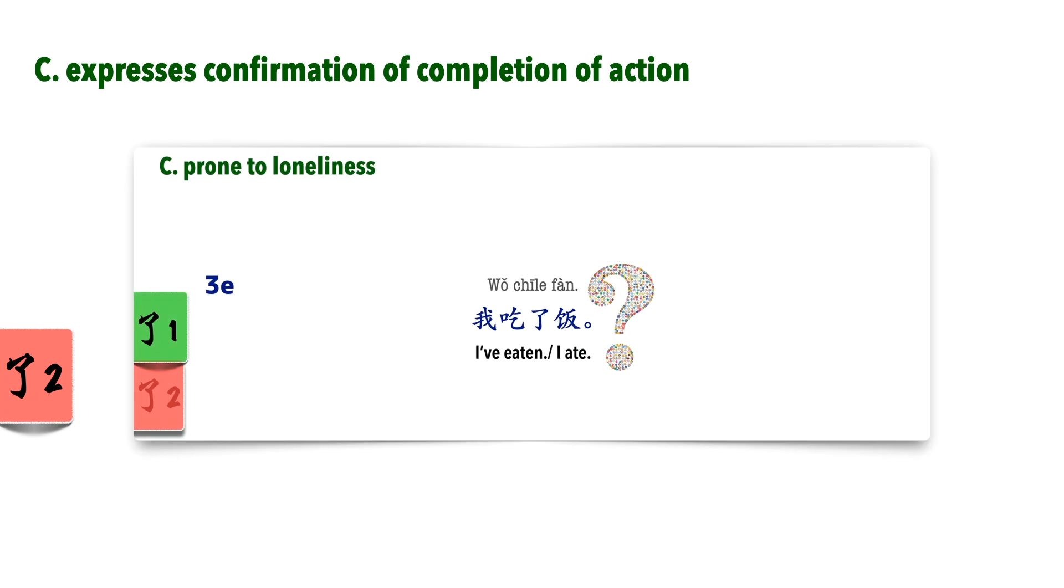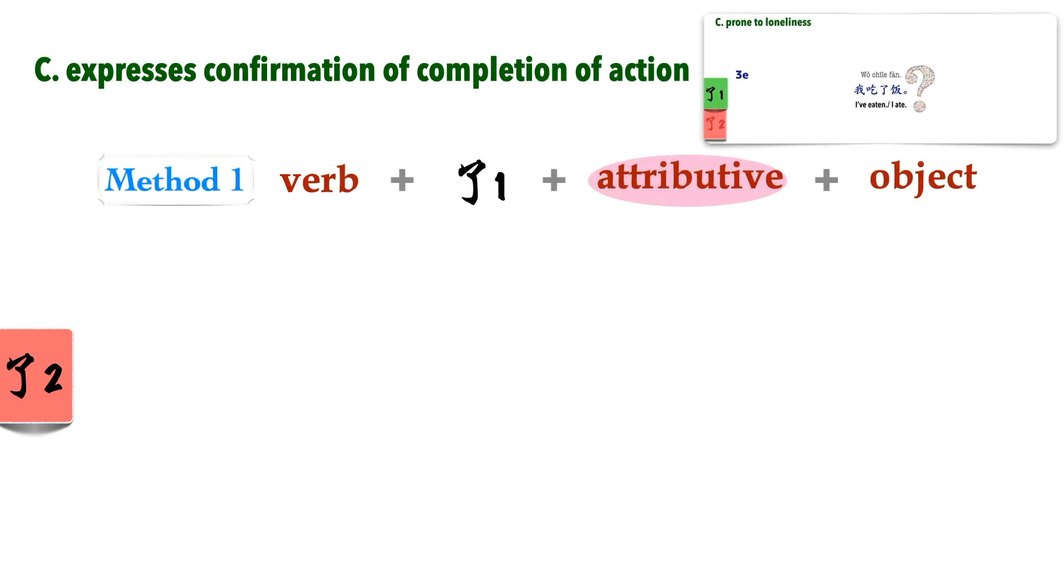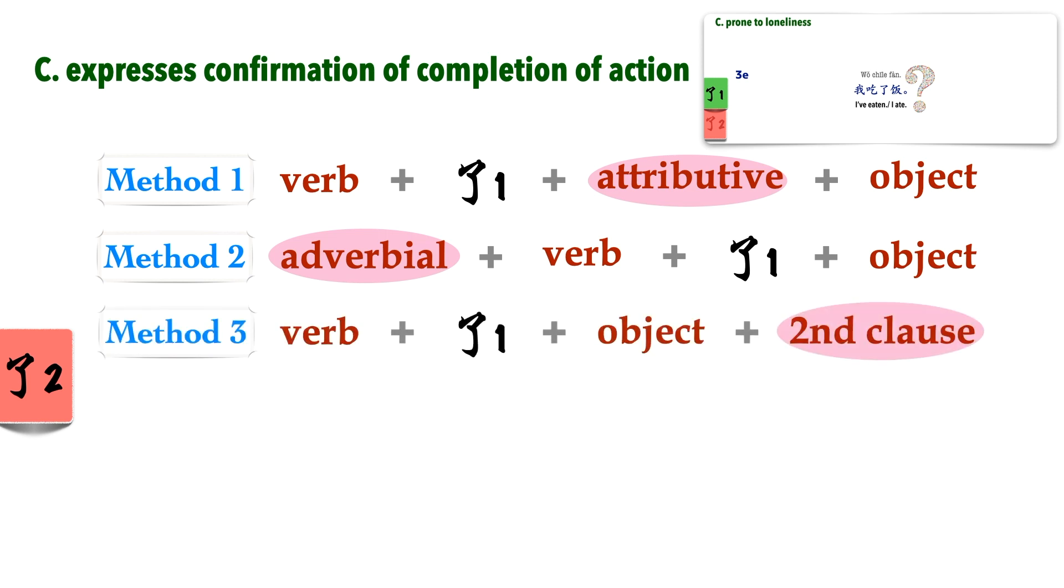Expresses confirmation of completion of action. Actually, this should also be part of point B, expressing change, but I've chosen to single it out because this feature of 了2 is probably the most confusing. Remember, when we were looking at 了1, I said that this sentence is a bit awkward: 我吃了饭. It sounds as if the sentence is half-finished. To make it sound complete, we learned earlier that you could either insert an attributive before the object, an adverbial adjunct before the verb, or continue with the second part of the sentence. Now you have yet another way to finish it off nicely. Simply add 了2 at the end.